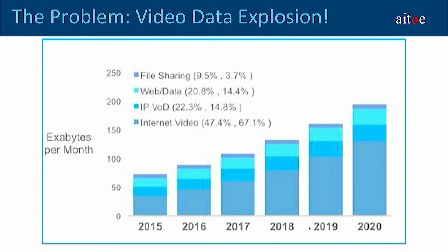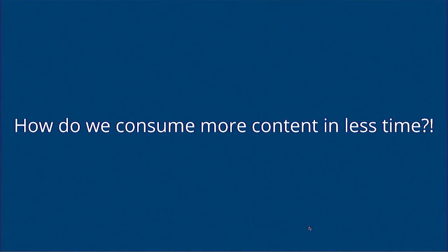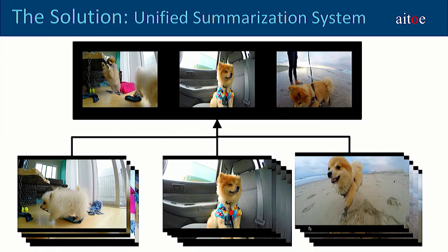The main problem we're trying to solve is video data explosion. According to the Zettabyte Era report in 2016 by Cisco, it's going to take five million years to go through the amount of video content flowing through the internet in just one month. GoPro cameras, surveillance cameras, drones, and autonomous cars are going to be generating a ton of videos. The main question is: how do we consume more content in less time?